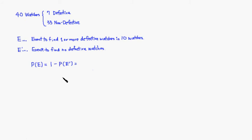So we're going to compute that. Probability of E equals one minus probability of E complement. We have to count the total number of ways to choose 10 watches out of 40 watches. That's going to be a combination C(40, 10). That's pretty easy.